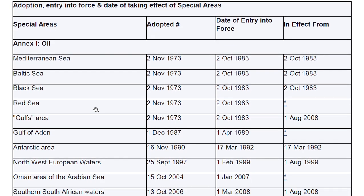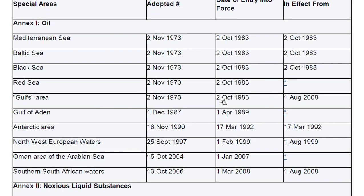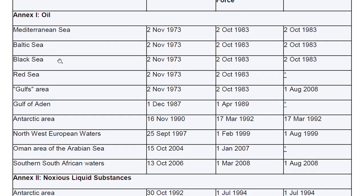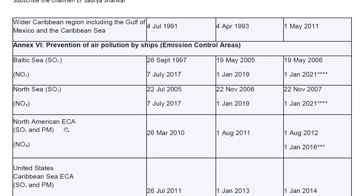First, let's look at the special areas in Annex 1. Don't remember the dates — those are irrelevant. In Annex 1: Mediterranean Sea, Baltic Sea, Black Sea, Red Sea, Gulf area, Antarctic Sea — this is very special, we'll see it later — Northwest European waters, Oman area of Arabian Sea, and Southern South African waters. This last one is newly added; it came into effect in 2008, a recent amendment to MARPOL Annex 1.